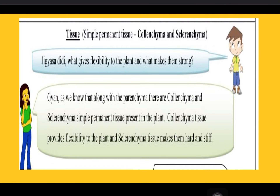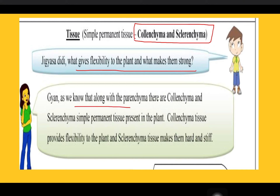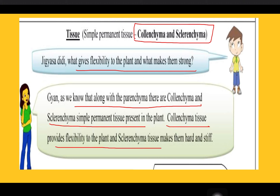As we have studied about the parenchyma, today we'll read about the colenchyma and sclerenchyma — these are also the other two types of simple permanent tissue. Along with the parenchyma, colenchyma and sclerenchyma are also simple permanent tissues present in plants. Colenchyma tissue provides flexibility to the plant, and sclerenchyma tissue makes them hard and stiff.